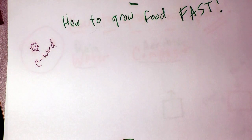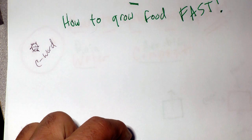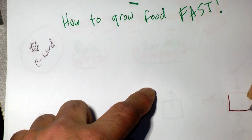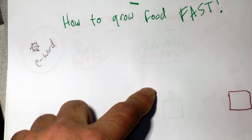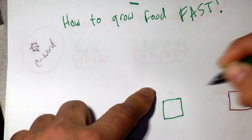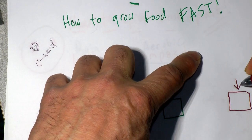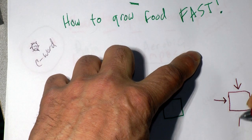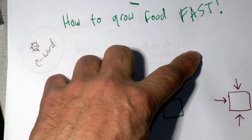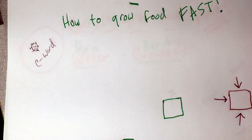Before we get into the ingredients of how to grow food fast, we're going to draw two little properties here. We have the outside-in property and we have the inside-out property. The outside-in property has to receive inputs — things going into the property — and those inputs in aggregate produce the outputs, which in this case is food.